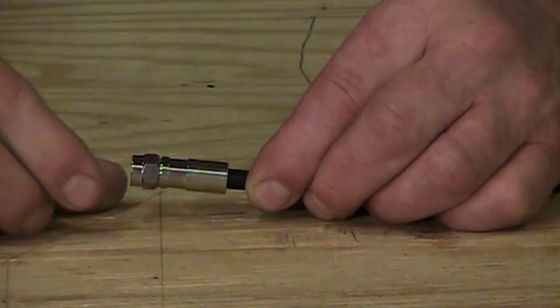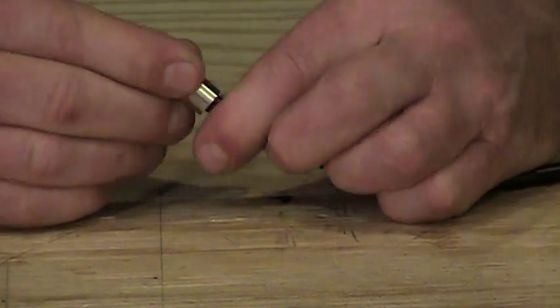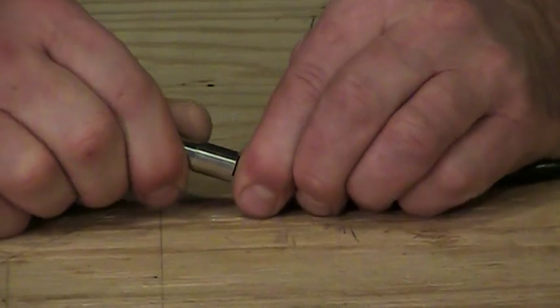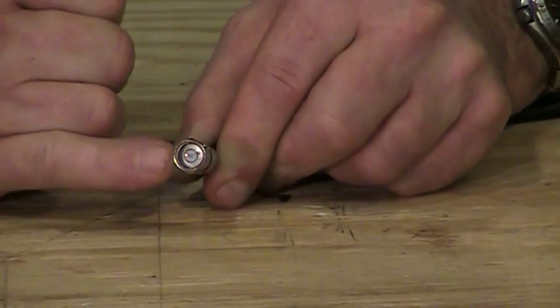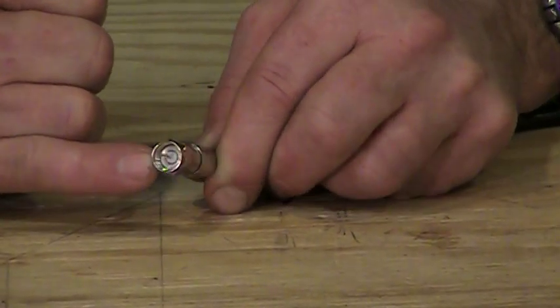and then all these connectors are like an F connector, we're going to just push the connector all the way on until the white dielectric is even or flush with the inside of that opening,